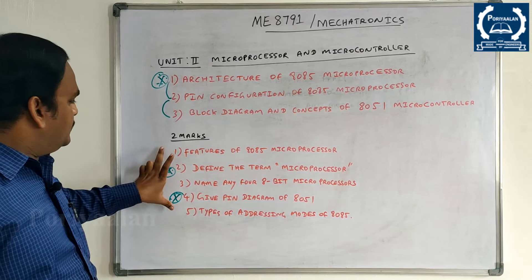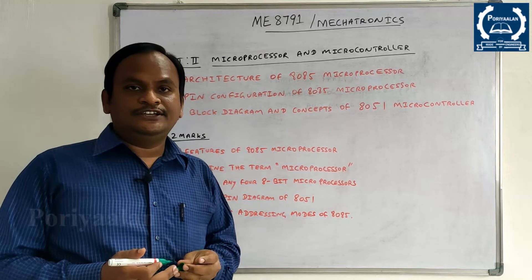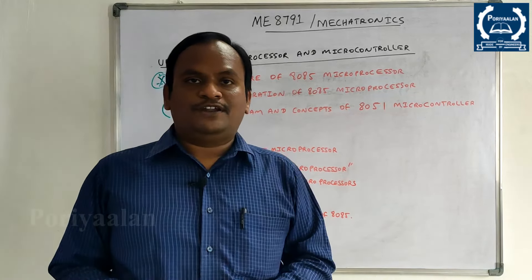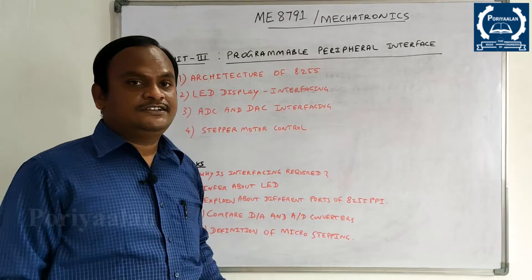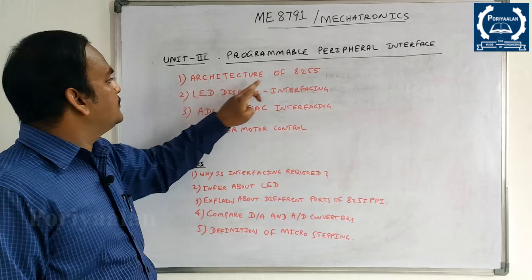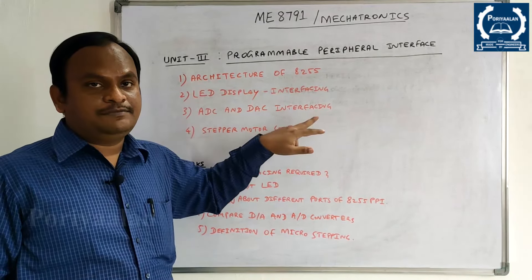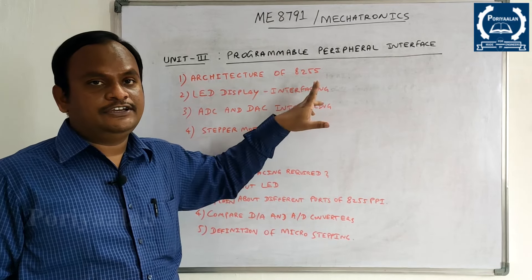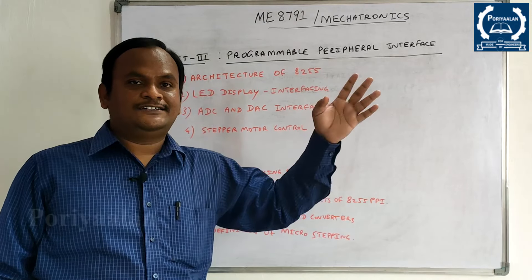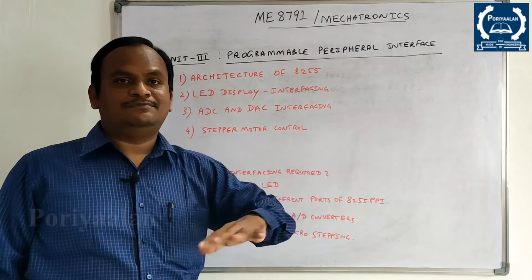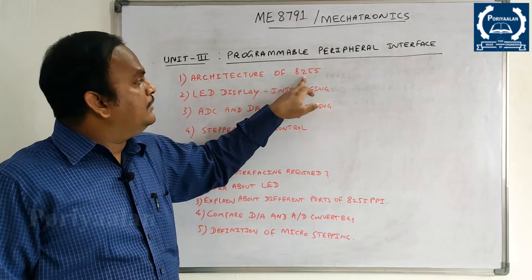The 2nd unit is very important. There is a big mark in the 2nd unit — you can guarantee the full mark. For the 3rd unit, Programmable Peripheral Interface: the architecture of 8255 is the key topic. Note: 8085 is a mistake — it should be 8255.